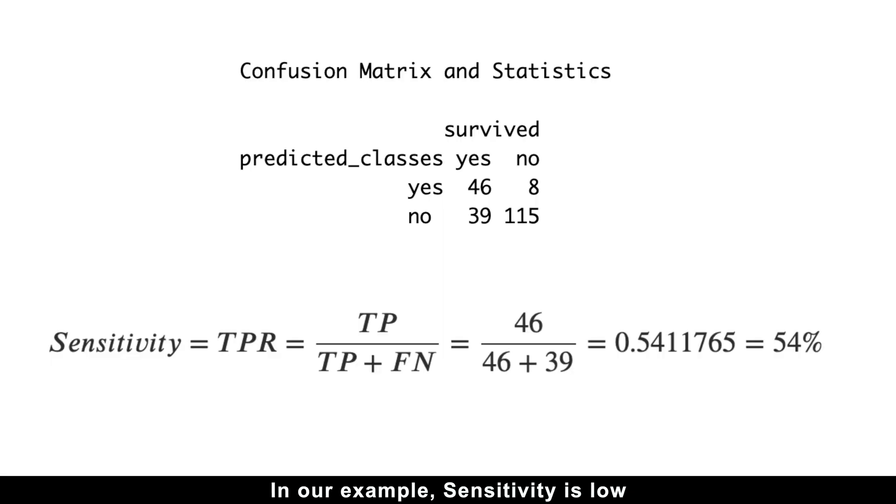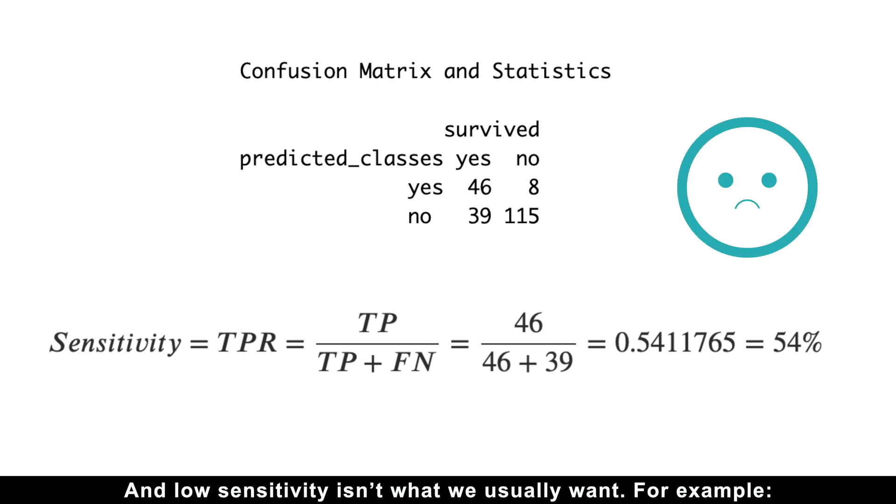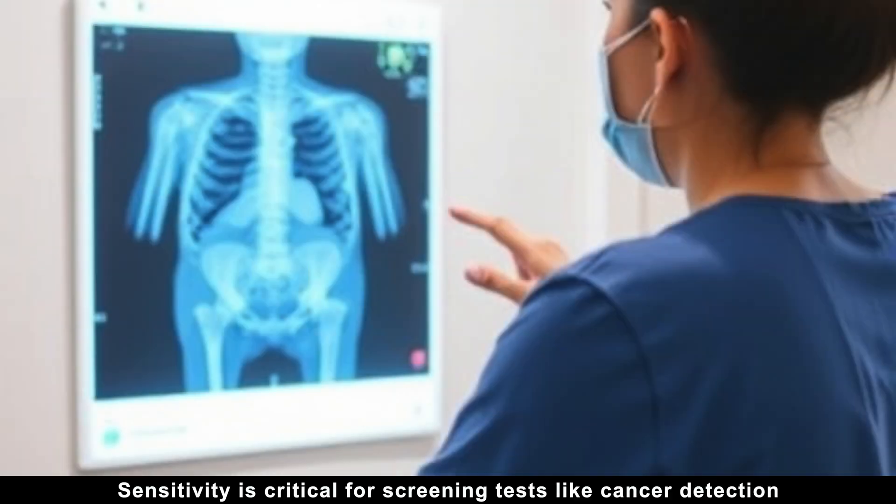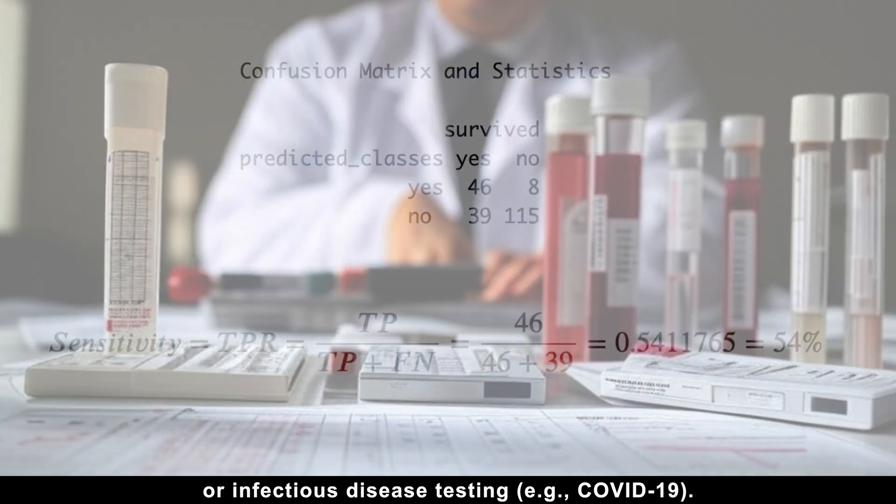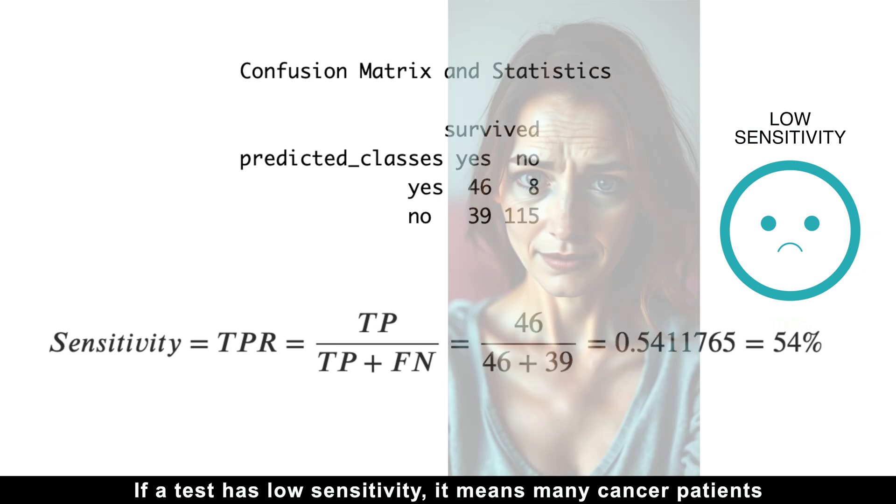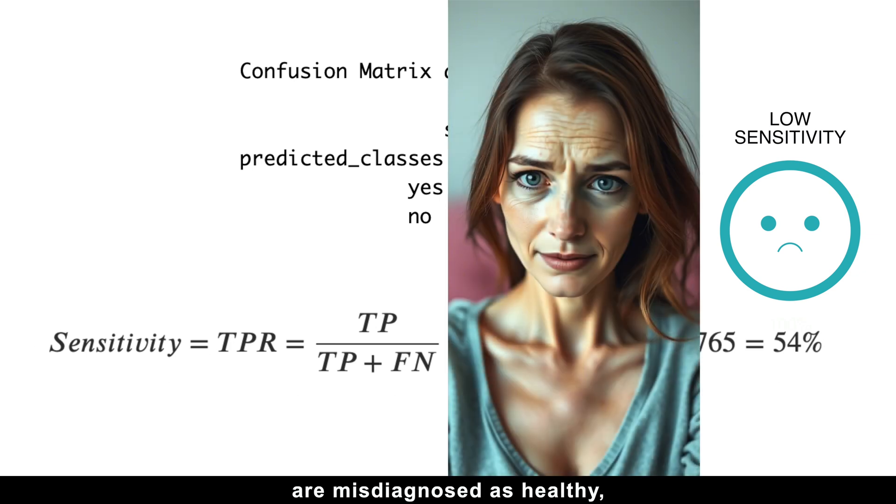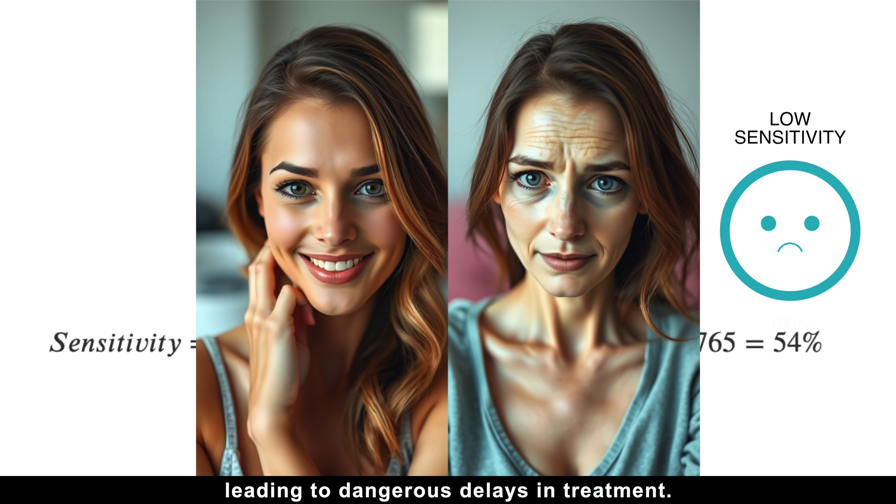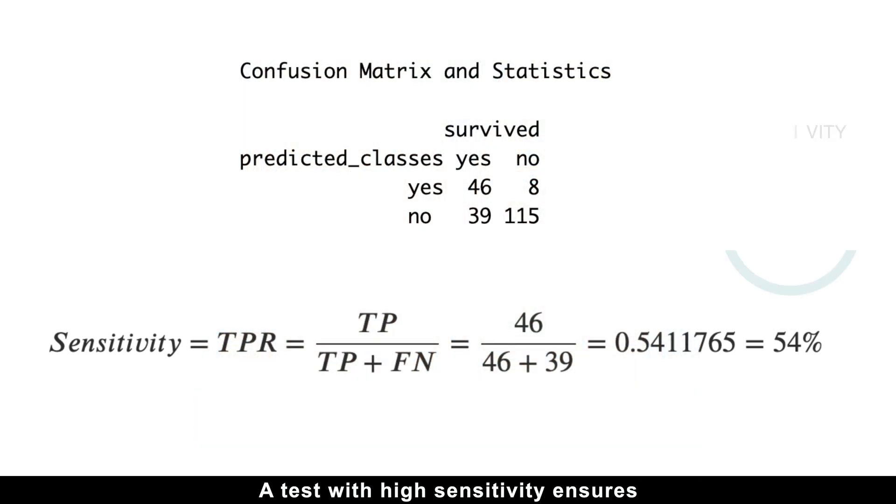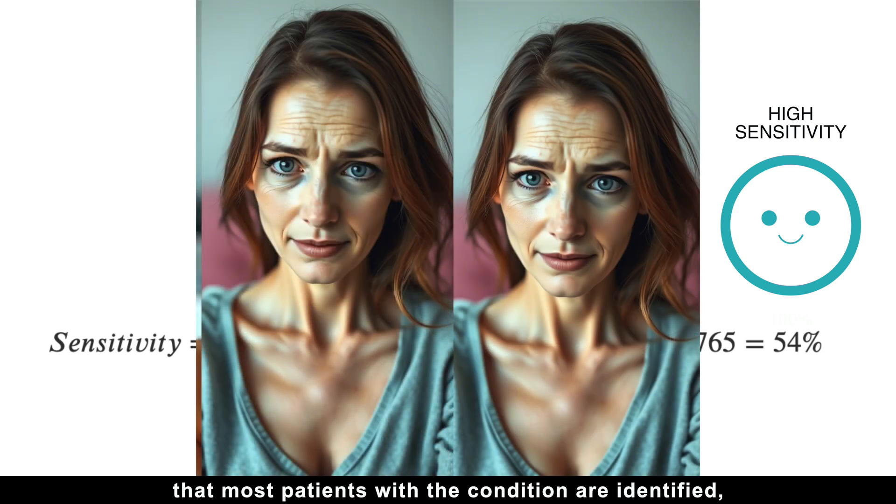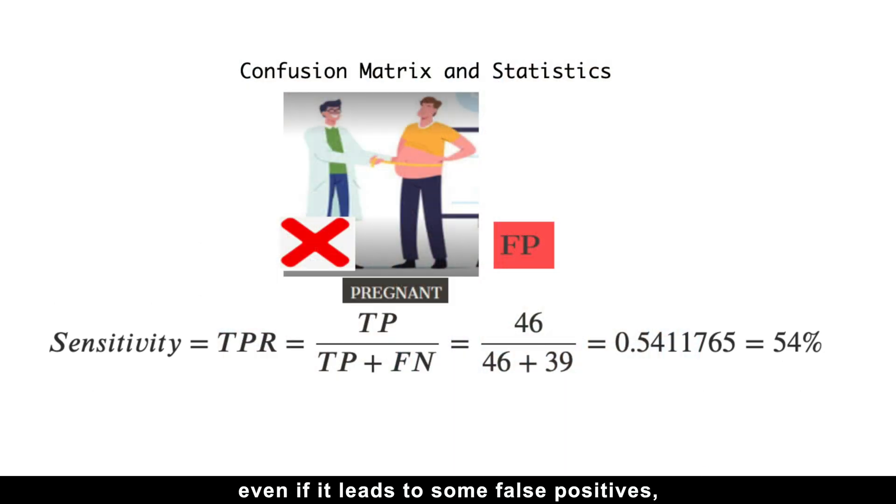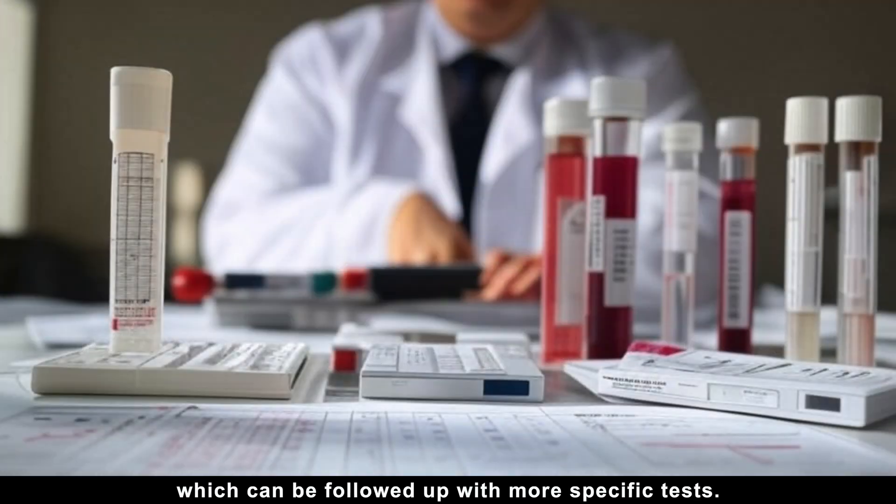In our example, sensitivity is low, because we missed 39 survivors. And low sensitivity isn't what we usually want. For example, in medicine, sensitivity is critical for screening tests like cancer detection or infectious disease testing, like COVID-19. If a test has low sensitivity, it means many cancer patients are misdiagnosed as healthy, leading to dangerous delays in treatment. A test with high sensitivity ensures that most patients with the condition are identified, even if it leads to some false positives, which can be followed up with more specific tests.